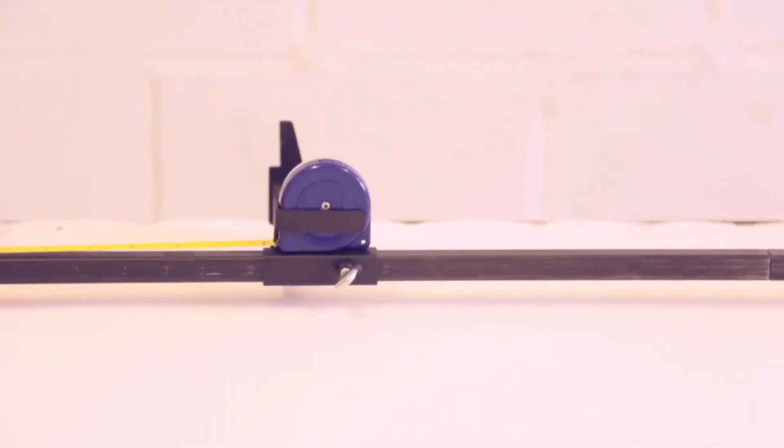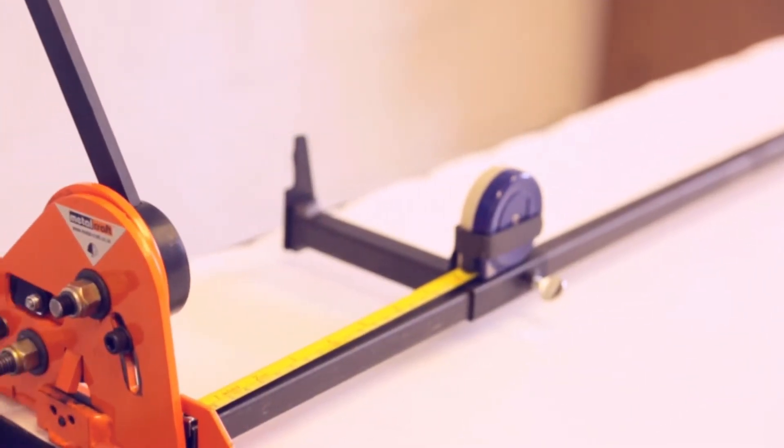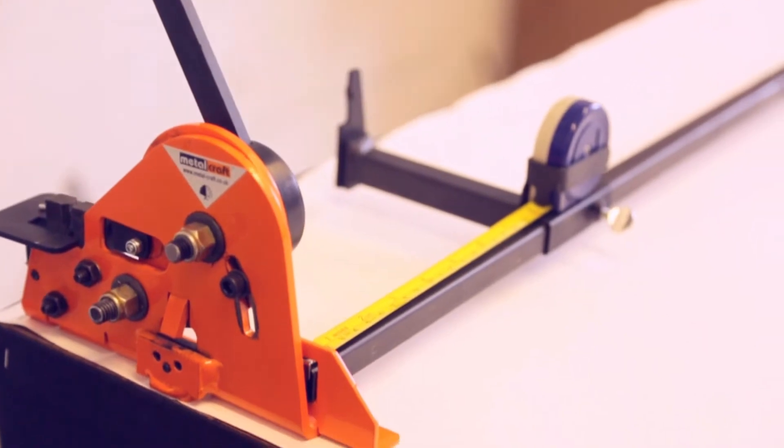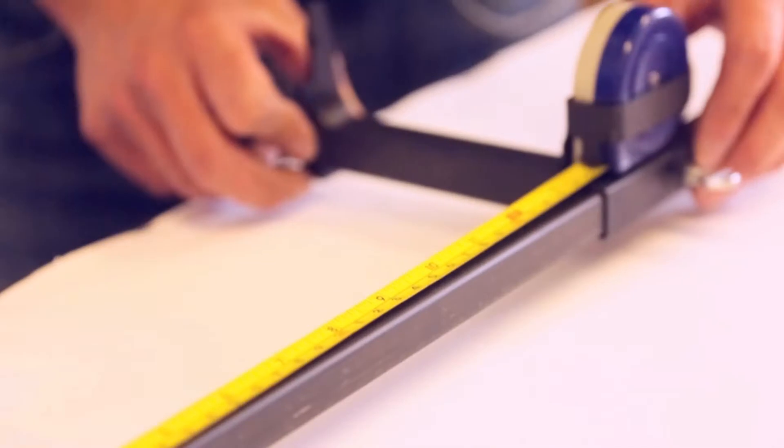The latest upgrade to the Practical Punch and Shear is the new tape measuring device, which gives increased accuracy when cutting or punching hole positions. Move the tape to set your measurement, then lock in place.